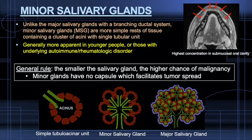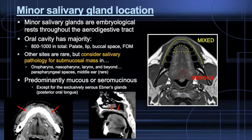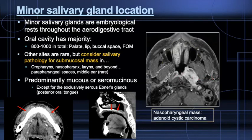Minor salivary glands are dispersed all over the aerodigestive tract with nearly 1,000 throughout the submucosal oral cavity, especially at the lips, inner cheeks, and palate. They lack a capsule and organized tubuloacinar architecture. As a general rule, the smaller the salivary gland, the greater odds of a mass being malignant. Minor salivary glands are mostly mucinous, except at the posterior oral tongue. Don't forget to include minor salivary tumors in the differential diagnosis, especially in young patients or when the mass is submucosal in location. This is an example of a nasopharyngeal adenoid cystic carcinoma.